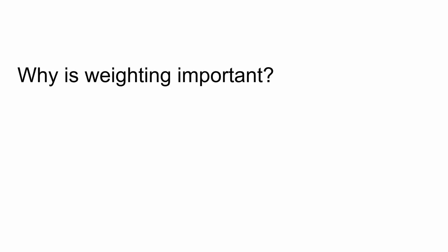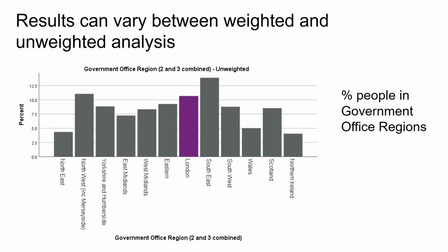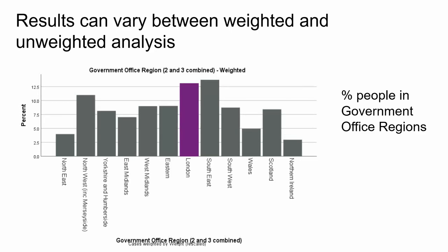Why is weighting important? Results can vary between weighted and unweighted analysis. This example illustrates the difference between weighted and unweighted results from the Quarterly Labour Force Survey 2015. These charts show the proportion of individuals in each area or government office region. In particular, look at the difference for the percentage of individuals in London. In the unweighted graph, the percentage in London is around 11%. After weighting, however, this figure is around 13%. Weighted results are more representative of the population because biases have been minimised by applying the weight.